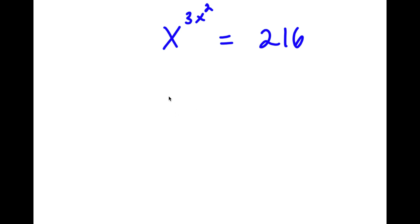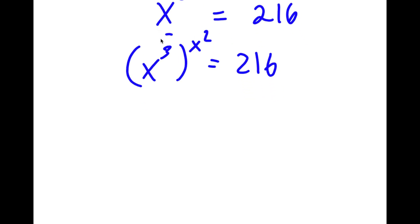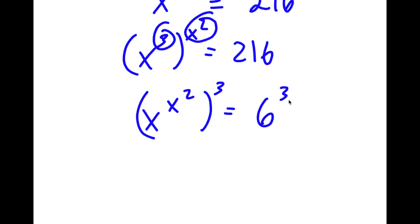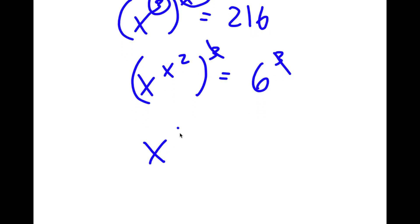In this problem, I have x to the power of 3x² is equal to 216. I'm going to rewrite this as x to the power of 3 to the power of x² equals 216, then switch the order so this is x to the power of x² to the power of 3 equals 216, which I rewrite as 6 to the power of 3. The two 3s cancel out, so now I have x to the power of x² is equal to 6.